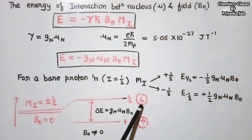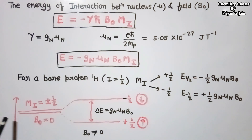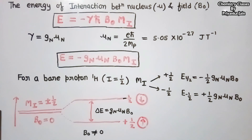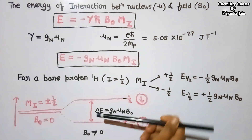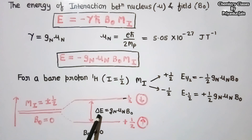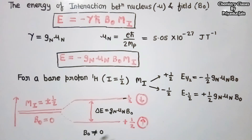When we expose the nucleus to radio frequency radiation applied perpendicular to the magnetic field, and if the energy of that radiation equals gₙμₙB₀, then there will be a flip of spin from the lower state to the upper state. This spin flip is called nuclear magnetic resonance — this is the condition of resonance.